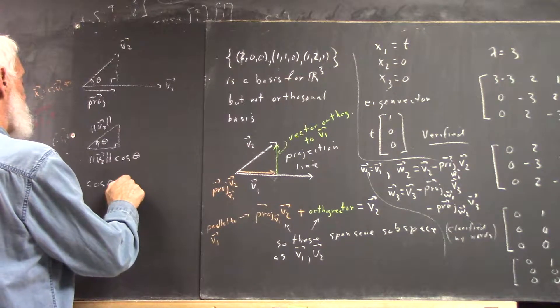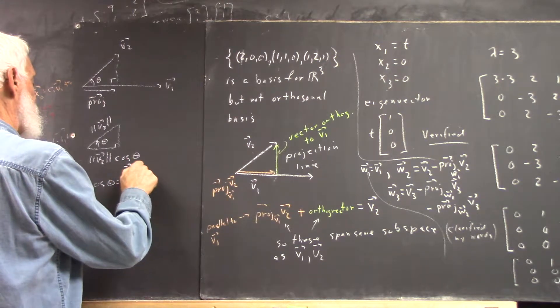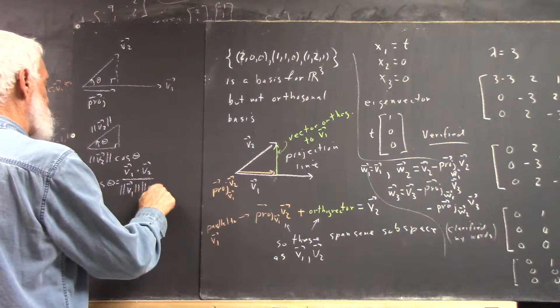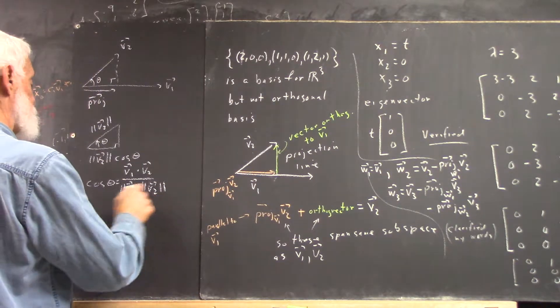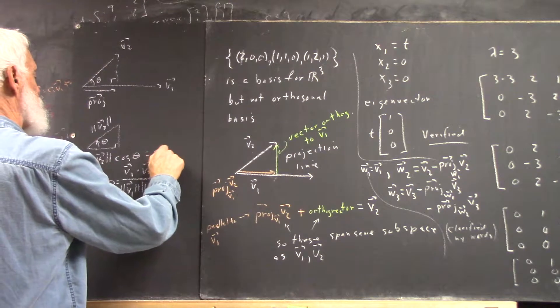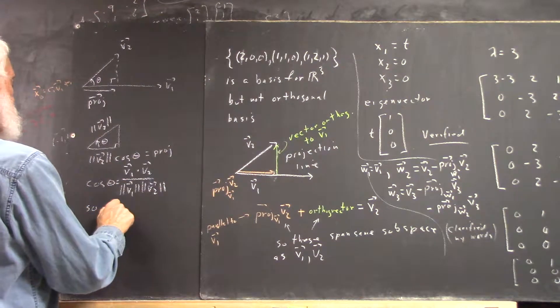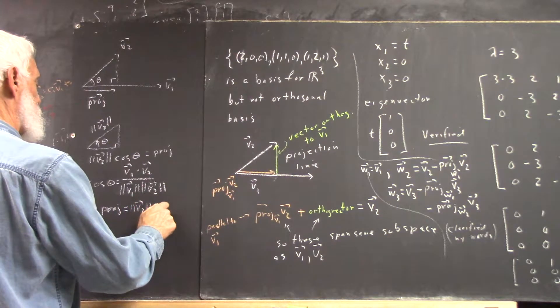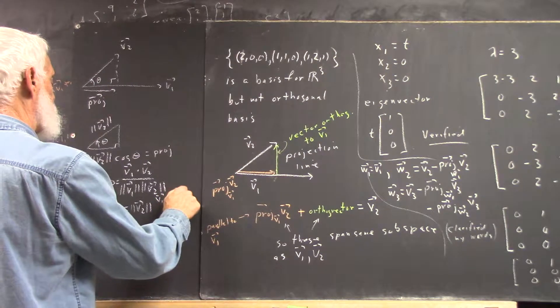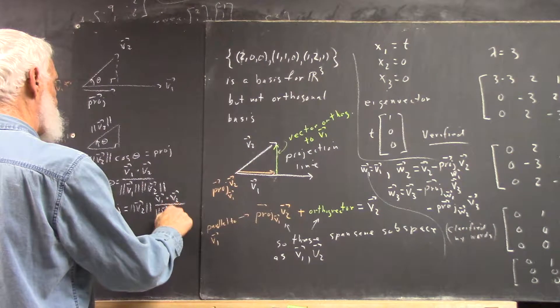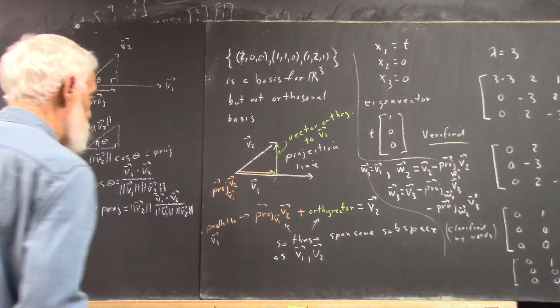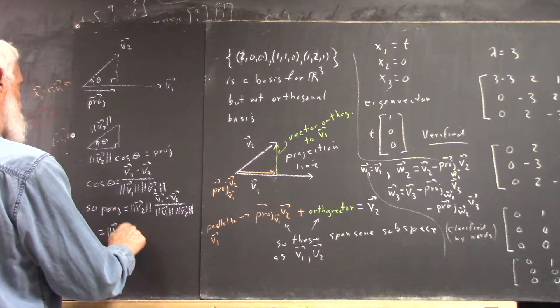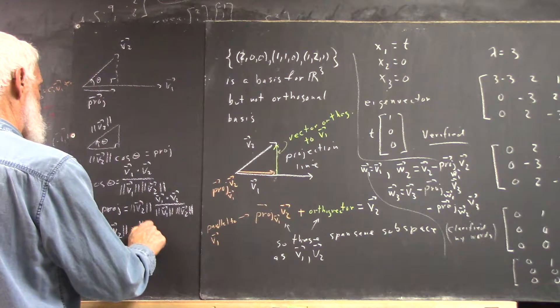Well, cosine theta is V1 dot V2 divided by the magnitude of V1 times the magnitude of V2. So, the projection is magnitude of V2 times V1 dot V2 over magnitude of V1. Which is just the magnitude of V2 times...